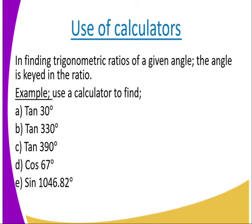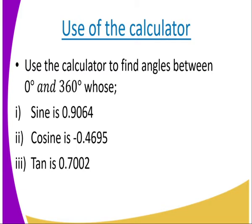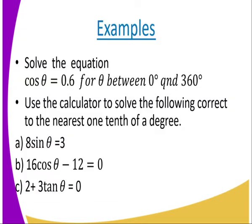How do you use the calculator? Just using the calculator, you press the way they are. 30 degrees, 330. And then the answers are going to be displayed on your calculator. That one is very simple. Just press in the calculator, the angle. That is the way you can also get the sine inverse. This is the activity. You are supposed to use the calculator to get that. Sine 0.9064. You get the sine inverse using the shift. Another example of the equation, theta is equal to 0.6 for theta between 0 and 360. Then use the calculator to solve. So we have 8 sin theta is equal to 3. And 16 cos theta minus 12 is equal to 0. Then 2 plus 3 tan theta is equal to 0.